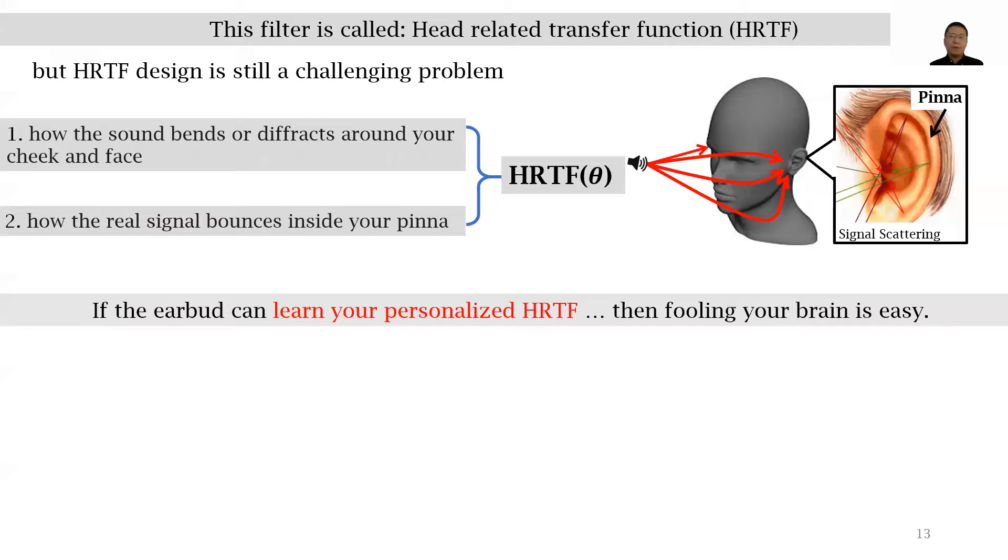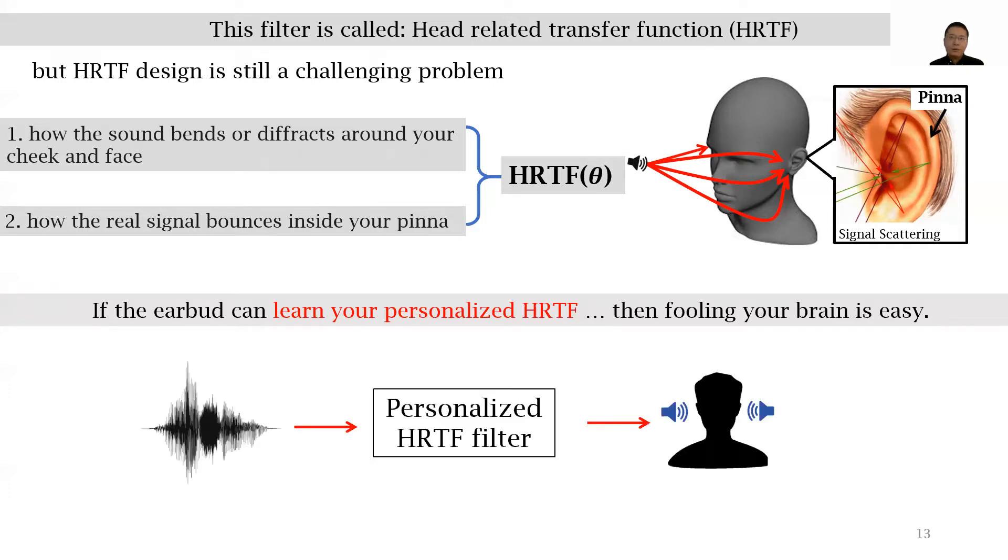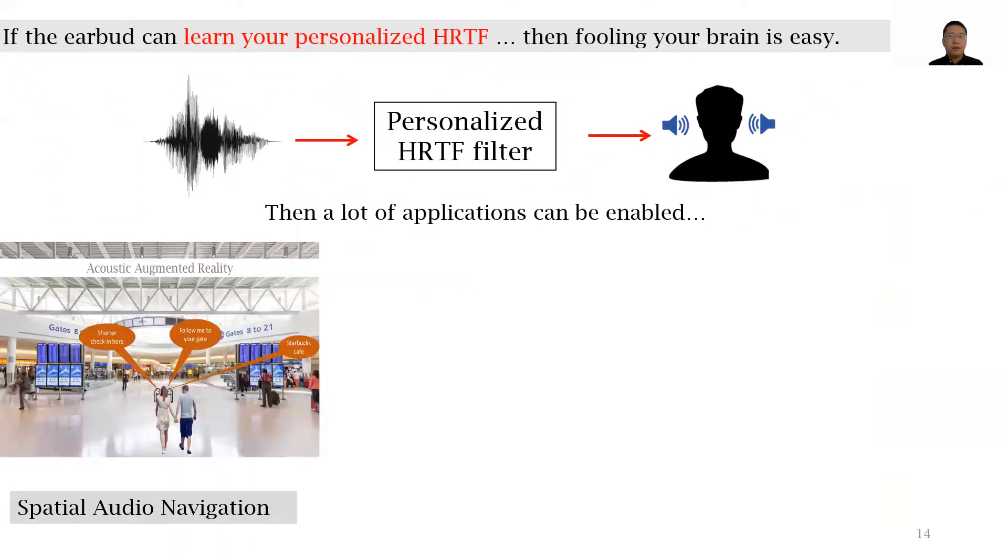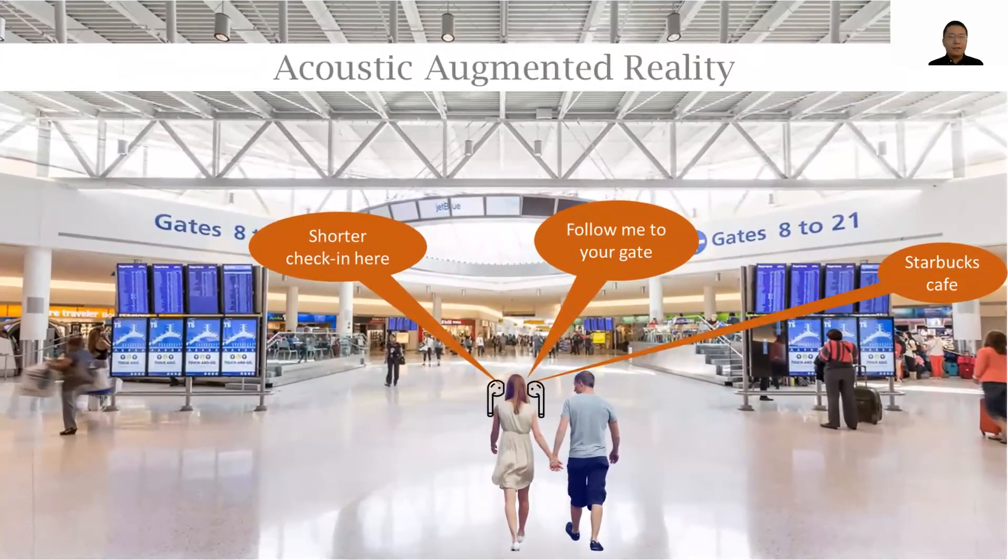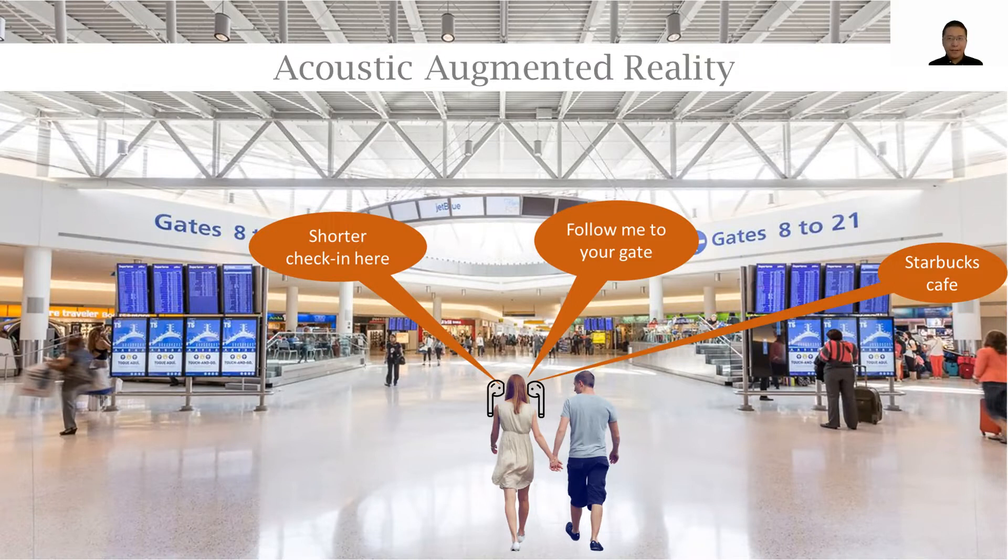If the earbud can learn your personalized HRTF, then the task of fooling your brain is actually easy. We essentially need to pass the original sound signal through the personalized HRTF filter, and then a realistic spatial audio can be created. This can enable a lot of applications. For example, spatial audio-based navigation. Imagine an acoustic augmented reality scenario where the user is at the airport trying to find her gate. We can play a 'follow me to your gate' sound from the earphone using virtual spatial audio, and then the user can follow the sound and reach the destination.